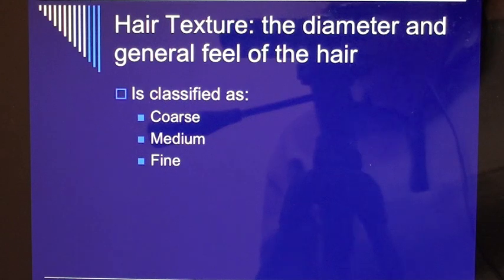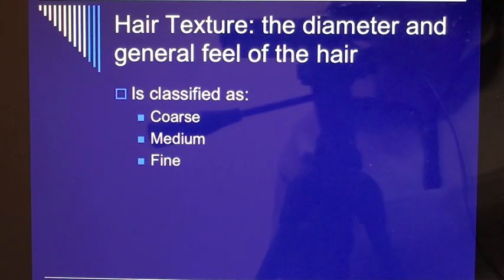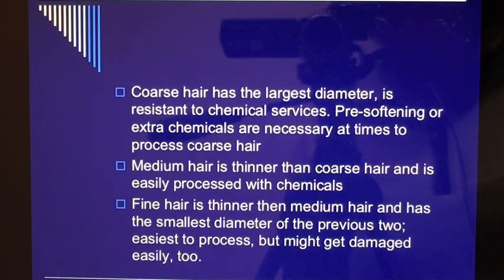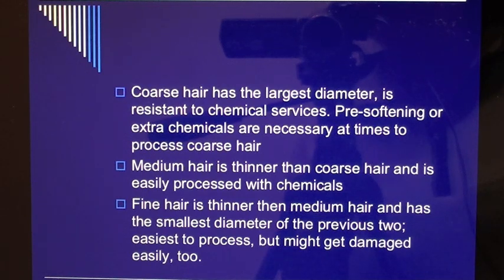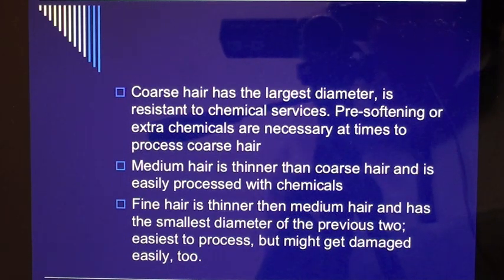Hair texture — the diameter and general feel of the hair — is classified as coarse, medium, or fine. Coarse hair has the largest diameter and is resistant to chemical services; pre-softening or extra chemicals are sometimes necessary. Medium hair is thinner than coarse hair and is easily processed with chemicals. Fine hair is thinner than medium hair and has the smallest diameter.